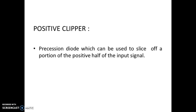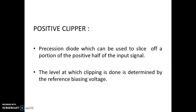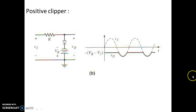When we define positive clippers, we can say that a diode is used to slice off a portion of the positive half of the input signal. The level at which the clipping is done is determined by the reference biasing voltage — that is, we apply a biasing voltage so that we can select the level at which the clipping is done.